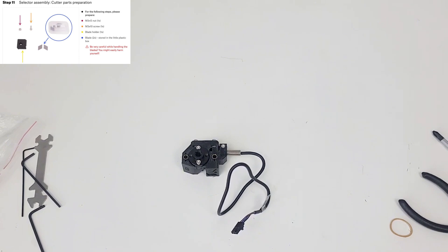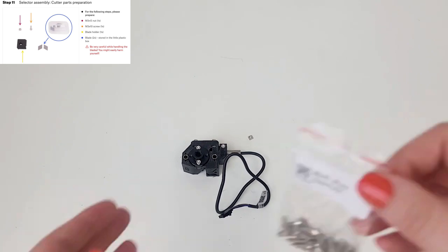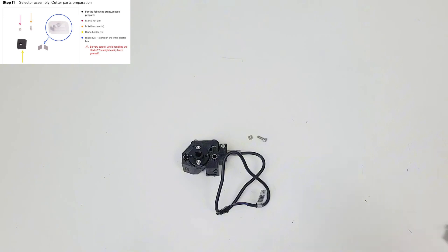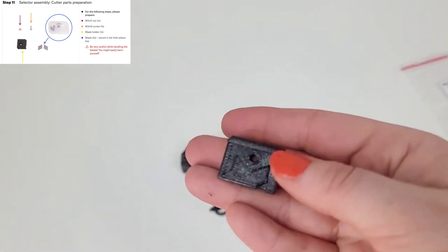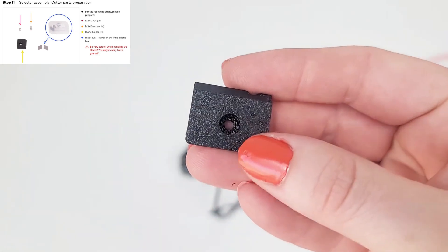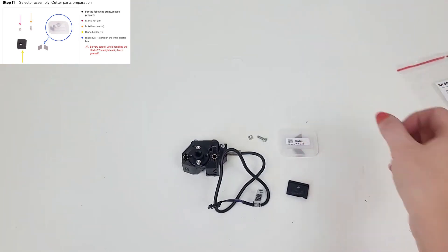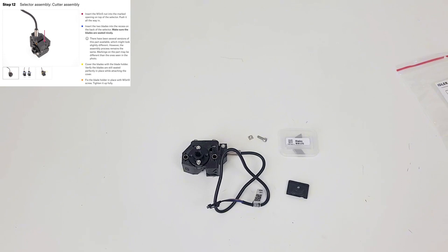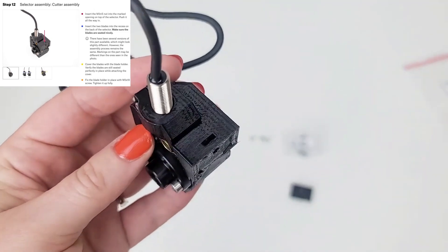Step 11: Selector assembly cutter parts preparation. We need another M3NS nut, one M3 by 10 screw, the blade holder, and the blades. Be very careful while handling the blades. You might easily harm yourself. Step 12: Insert the M3NS nut in the marked opening on the top of the selector. Push it all the way in.